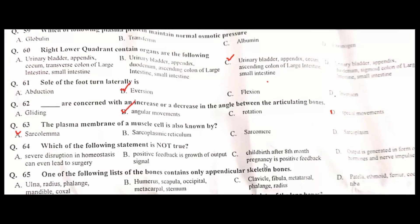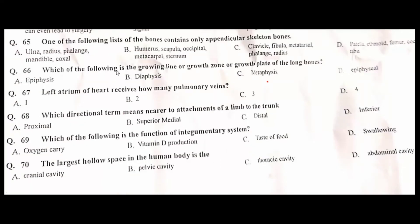The statement that is not true is that childbirth after eight months of pregnancy is a positive feedback — C is the correct option. A list of bones containing only appendicular skeleton bones includes the fibula, metatarsal, phalanges, and radius — C is the correct option.